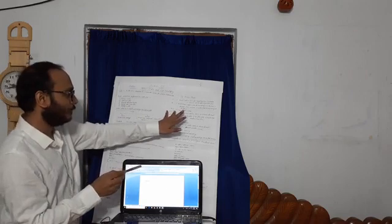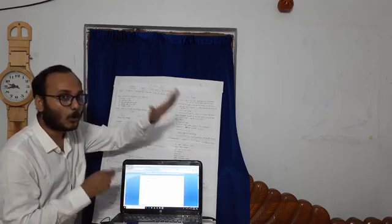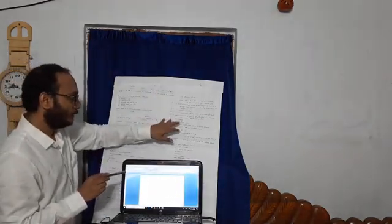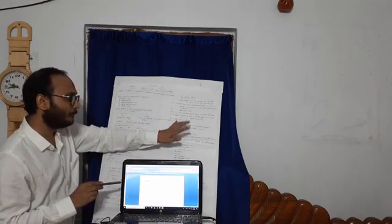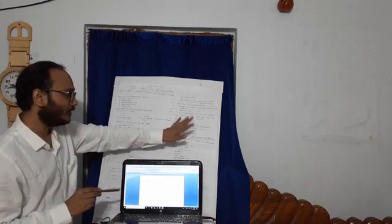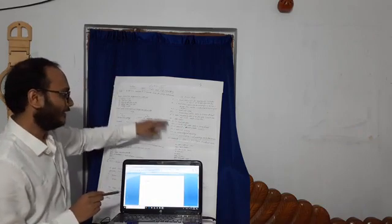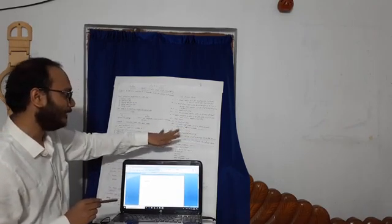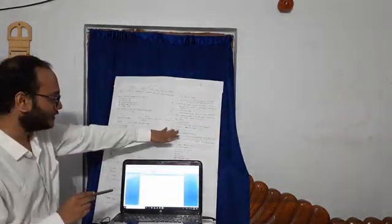Other access modes include: 'rb' for read binary, 'rb+' for read and write in binary format, 'w' for write, 'wb' for write binary, 'w+' for read and write, 'wb+' for read and write in binary format. Then 'a' for append, where the file pointer is at the end of the file, 'ab' for append binary, 'a+' for appending and reading, and 'ab+' for appending and reading in binary format.